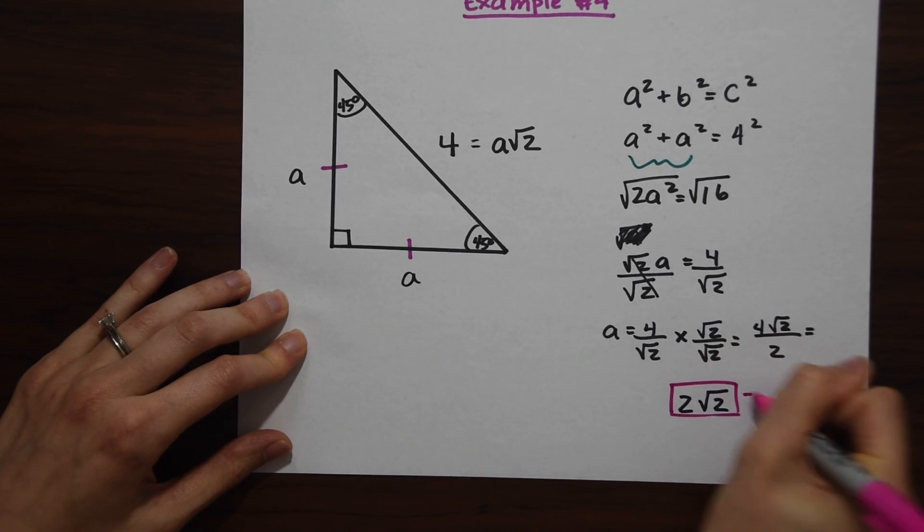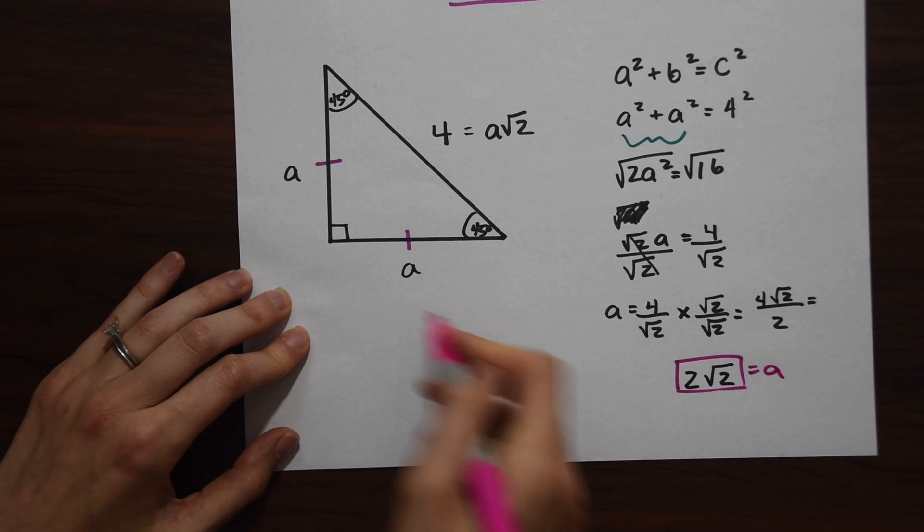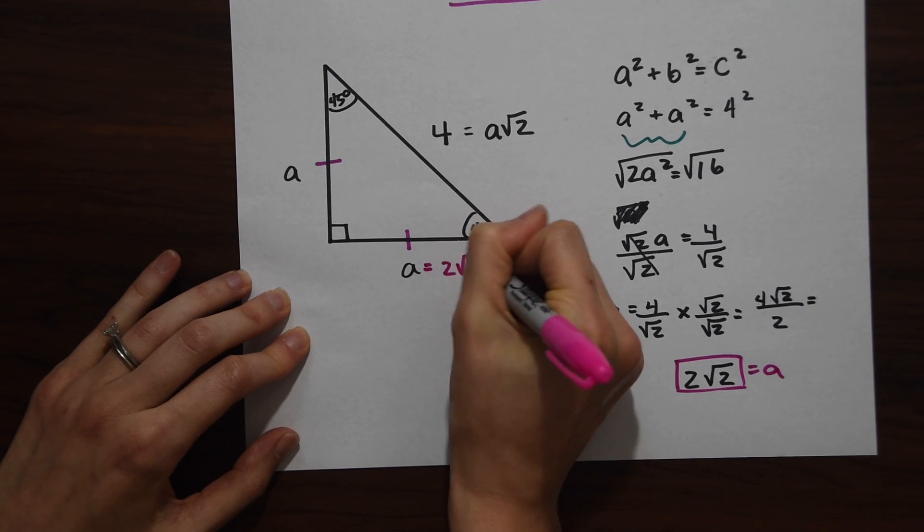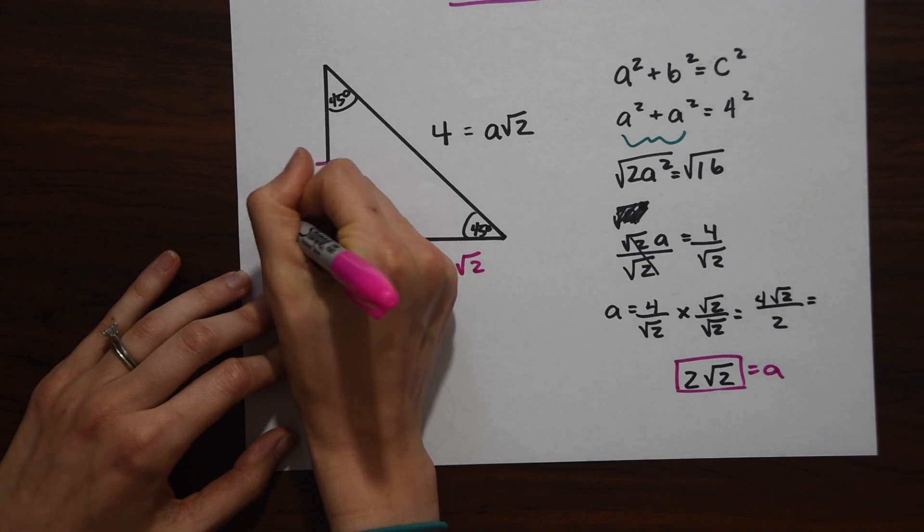Remember this is all equal to a, and we can go back and fill this in on our triangle. So a equals 2 radical 2 and over here a equals 2 radical 2.